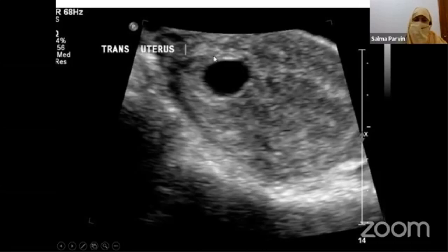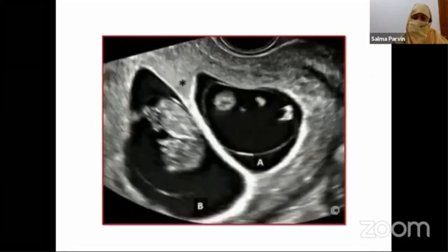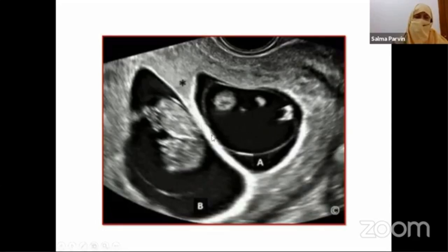This is a blighted ovum — it has a decidua capsularis and a decidua parietalis, but inside there is no fetal pole. A successful twin pregnancy shows two amniotic cavities — this is called the delta sign. There is penetration of placental tissue within the separating membrane between the fetuses, called the delta sign.